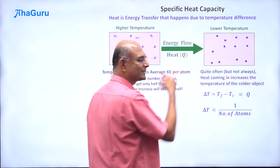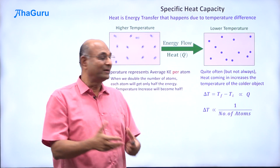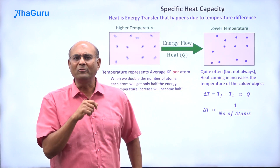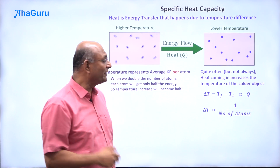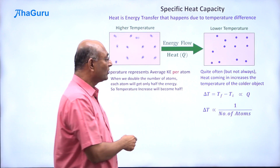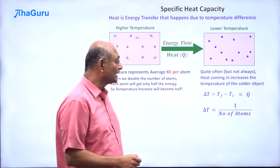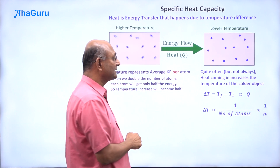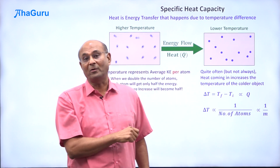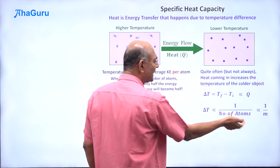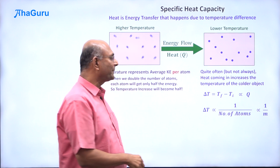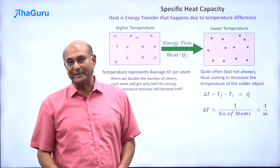The number of atoms is not a good term to use, so we are going to use something that represents it. Mass is a good way — more number of atoms will mean more mass, directly related. So instead of talking about number of atoms, I can use mass. The increase in temperature is inversely proportional to the mass of the object, because the mass tells you how many atoms are there. More mass means less temperature increase. For example, with 7 grams, each gram gets only one-seventh; with 20 grams, each gram gets only one-twentieth.